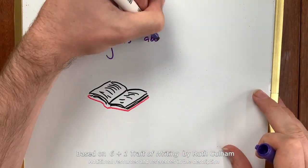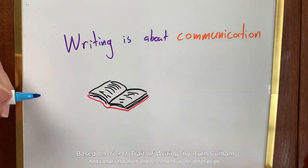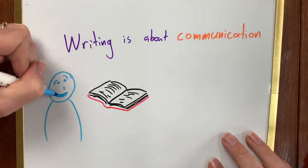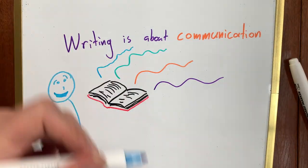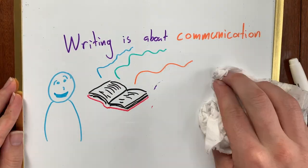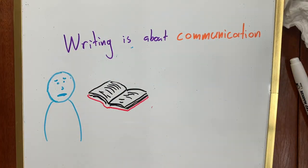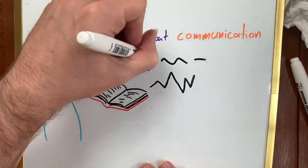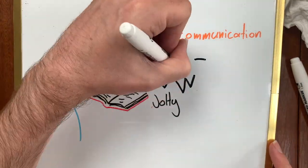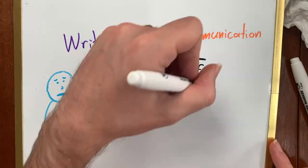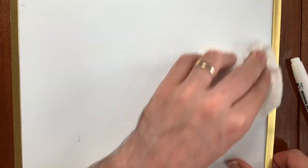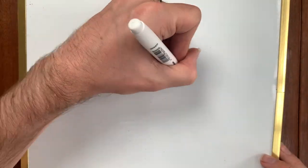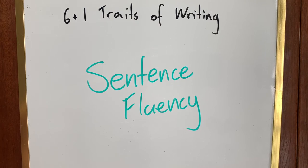Writing is about communication. We want to share our ideas easily with our reader. But what if your writing becomes jolty, stiff, two-stop start, boring? Well, you might have a problem with your sentence fluency, another one of our traits of writing.